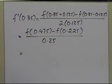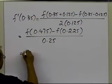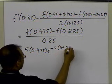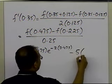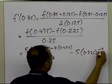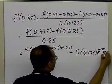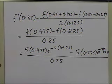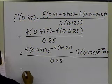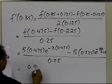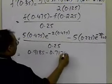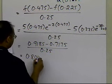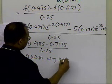Calculating the function values at those two points: f(0.475) = 5 × 0.475 × e^(−2 × 0.475) and f(0.225) = 5 × 0.225 × e^(−2 × 0.225). This gives 0.9185 minus 0.7175, divided by 0.25, which equals 0.8040. So using h = 0.125, f'(0.35) ≈ 0.8040.